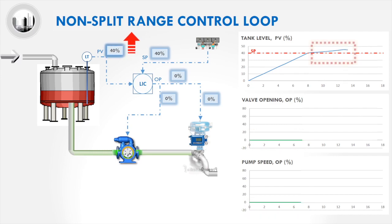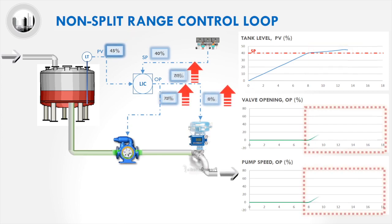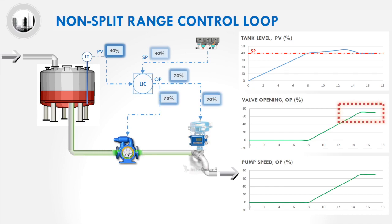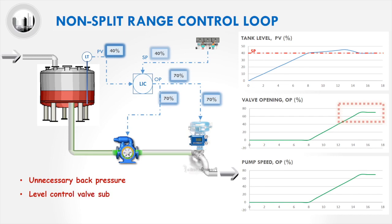Once the tank level increases above the set point, both the control valve opening and pump speed will increase. This will cause the tank level to slowly return back to the controller's set point. One important observation is that the control valve will be partially open even after the process has stabilized. When the control valve is partially opened, it will create unnecessary back pressure to the pump. Another disadvantage is that the control valve is subjected to more wear and tear as it is continuously throttling whenever there is a process disturbance.